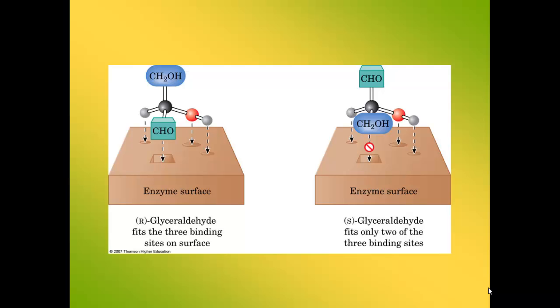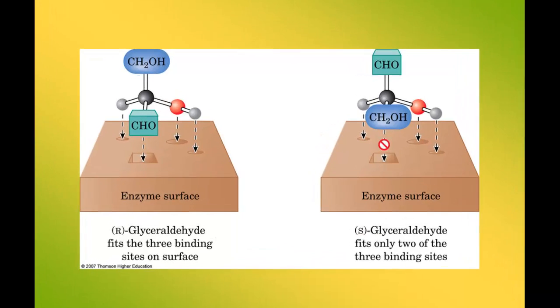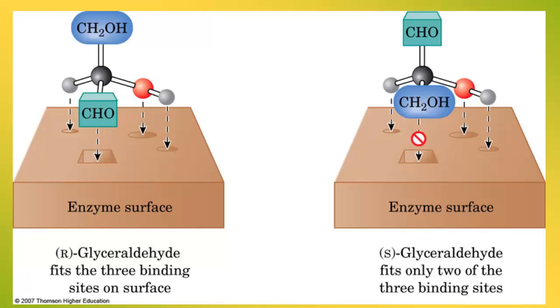Implications of stereoisomers are all around us, particularly in our body. Many biochemical reactions would not occur without enzymes catalyzing them, but enzymes are very specific to particular stereoisomers. Here's an example showing how an S stereoisomer would not catalyze a certain reaction because it does not fit properly into the enzyme surface.